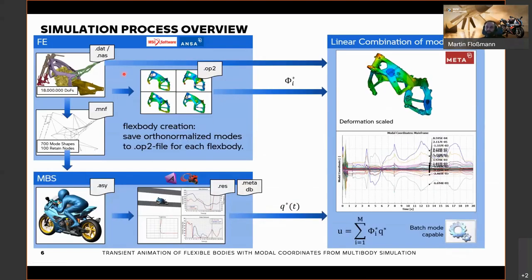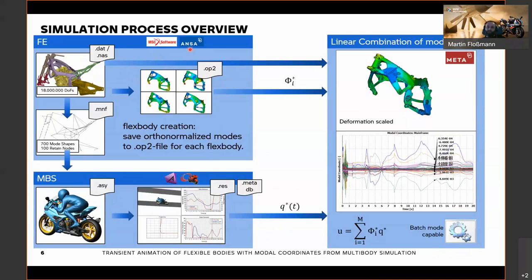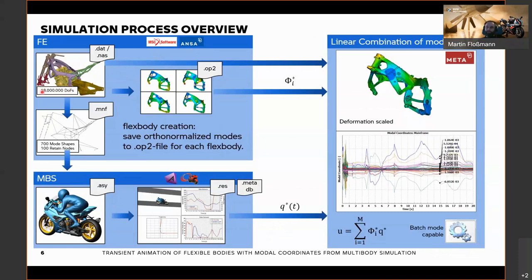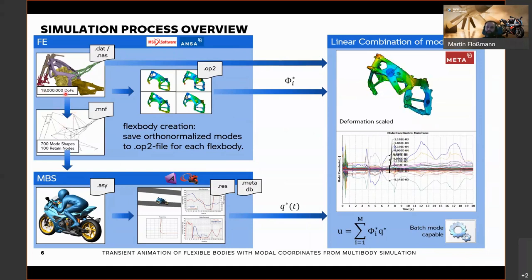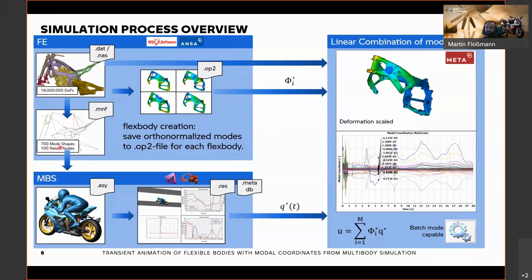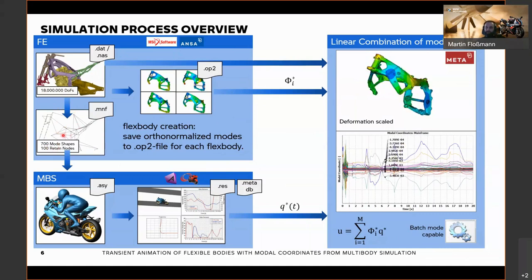At BMW Motorrad, we use Nastran as FE software and create models in ANSA as a preprocessor. The motorcycle structure in this example has around 80 million degrees of freedom. We create the modal neutral files — the MNF files — for the flexible bodies. This is a standard process. Instead of 80 million degrees of freedom, we end up with just 700 mode shapes and 100 retained nodes. Retained nodes are physical nodes used to connect each flex body, apply forces, apply joints, and whatever is needed in the multi-body simulation.